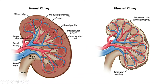Here's an example of what a diseased kidney might look like. As you can see, there is a shrunken pale cortex and granular scarring around the outside, so the diseased kidneys will look smaller.